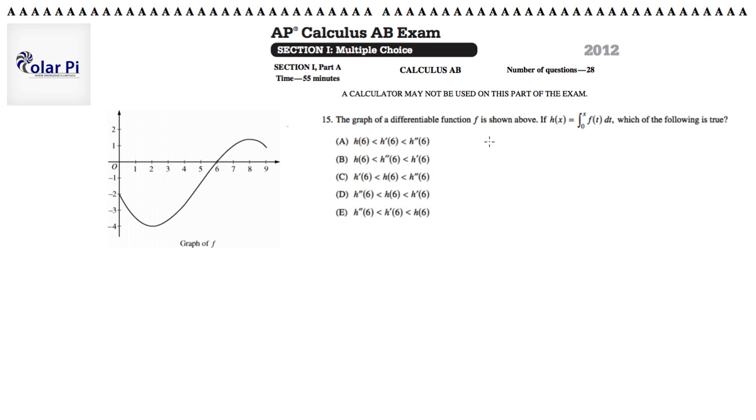So first, let's compute h(6), because we have h. h(6) would be the integral from 0 to 6 of f(t)dt. And our interpretation of that is the area bounded by f(t), or f(x), and the x-axis, or the t-axis. So that's this area here, right?